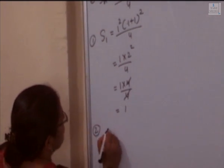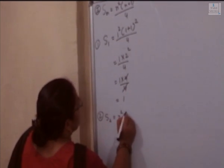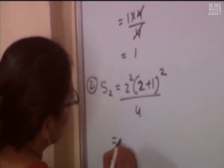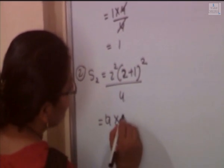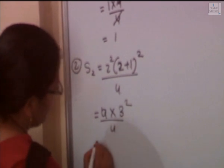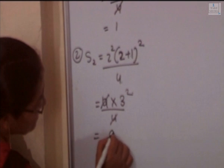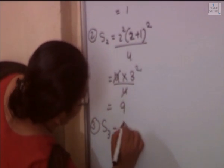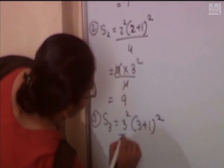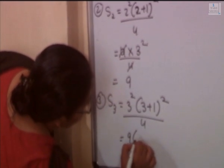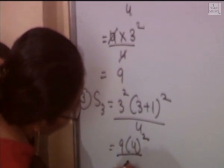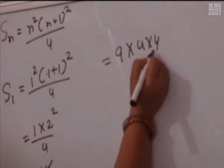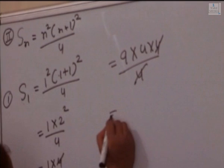Now calculate S2: substitute n equal to 2 into n²(n+1)²/4. So 2 square is 4, 2 plus 1 is 3, 3 square is 9. We get 4 into 9 upon 4. Cancel 4 by 4, S2 equal to 9. For S3: substitute n equal to 3. 3 square is 9, 3 plus 1 is 4, 4 square is 16. We get 9 into 16 upon 4. Cancel 4 by 4, S3 equal to 36.